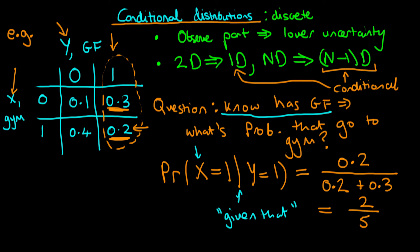Another way of viewing this is that because we've restricted ourselves to this quadrant of our joint distribution, the probability distribution needs to renormalize itself to be a valid probability distribution, since 0.3 and 0.2 don't sum to 1. We sum those two values together to get 0.5, and then use 0.5 to renormalize each quantity. So we get 0.6 when we divide 0.3 by 0.5, and 0.4 — in other words 2/5 — when we divide 0.2 by 0.5. That's intuitively how we calculate this quantity.